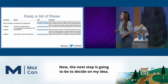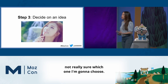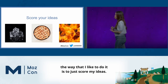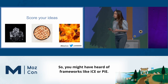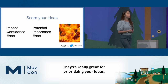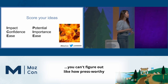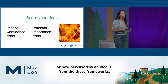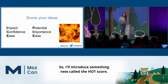Now the next step is going to be to decide on my idea. I have a few ideas and I'm not really sure which one I'm going to choose. The easiest way — the way that I like to do it — is to just score my ideas. You might have heard of frameworks like ICE or Pi. They're really great for prioritizing your ideas, but they don't determine how press worthy or news worthy an idea is. So I'll introduce something new called the HOT score.